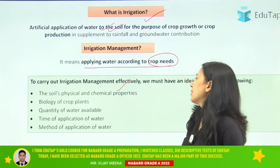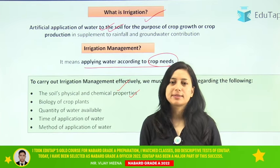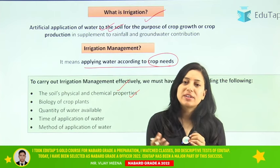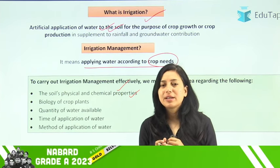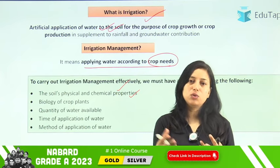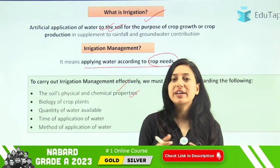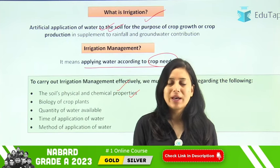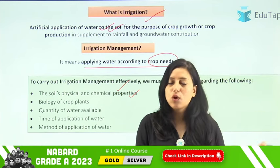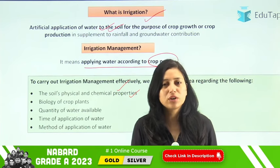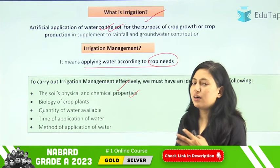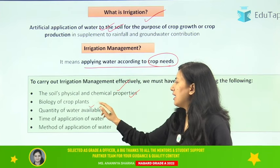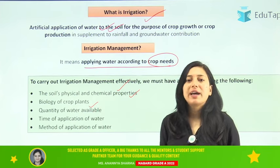The first factor is soil physical and chemical properties. You must know what the physical and chemical properties of the soil are in order to provide effective irrigation to the crop, because different soils have different requirements — some soils may need more water and some may need less. According to the soil's physical and chemical properties, we apply irrigation.